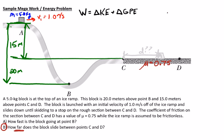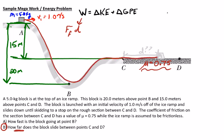This one's going to be a little bit different — we do actually have work being done. The reason why is because of this friction. So because we have friction acting on this thing, we're going to have work. The work portion is actually going to be the force of friction multiplied by the displacement of the object. That displacement is just going to be this part — from C to where it stops.